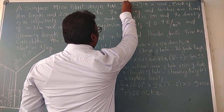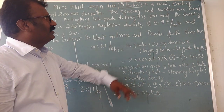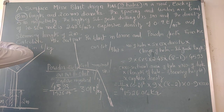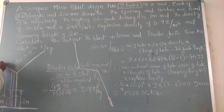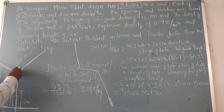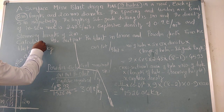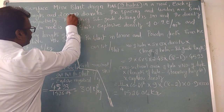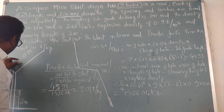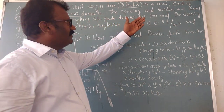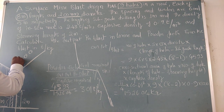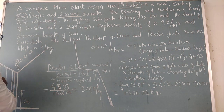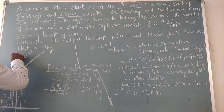The problem: a surface mine blast design has nine holes per row, each of eight meters length. I am showing a pictorial picture here — this is the bench with nine holes, each hole having a length of eight meters. The diameter is also given: 200 mm diameter, eight meters length, nine holes. Spacing and burden are also given. Spacing is the distance between each hole; burden is from the free face to the first row. It gives six meters spacing and five meters burden.